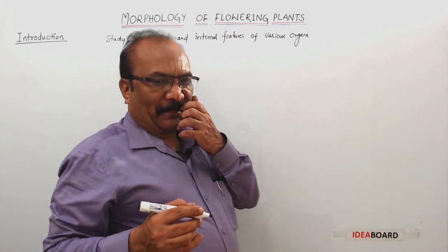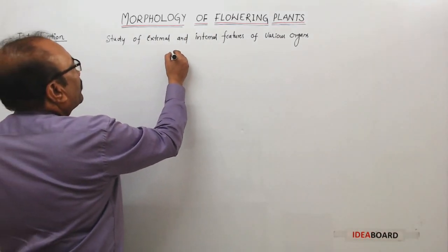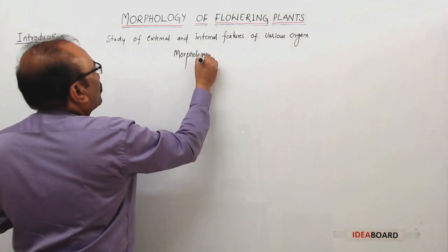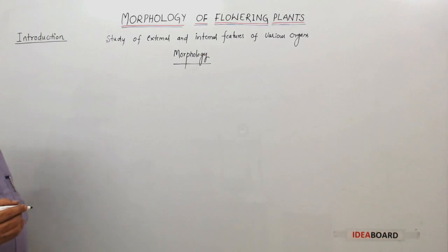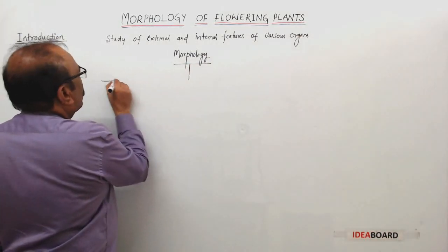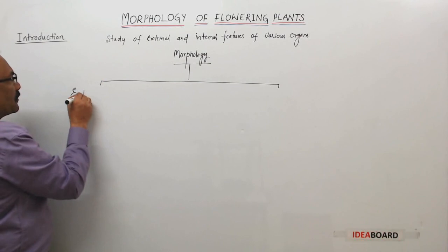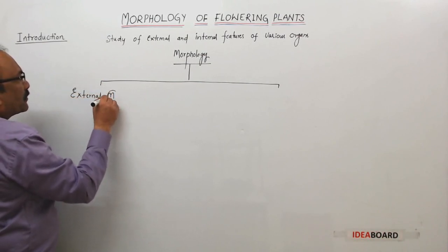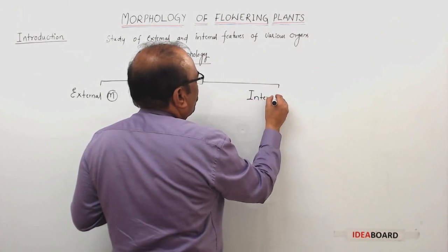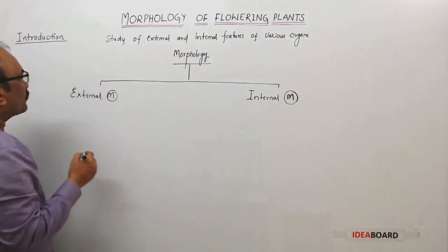Now, this morphology is further divided, for our convenience, into different branches for the convenience of study. One is external morphology, and another one is internal morphology.